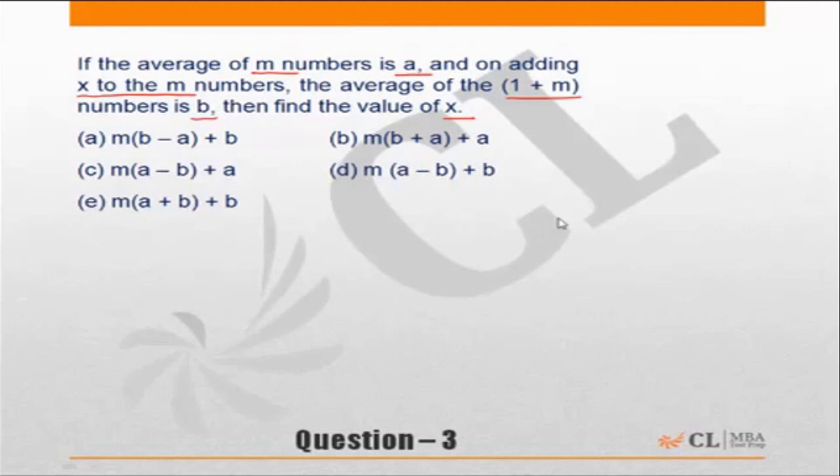Let me take, let's say, three numbers: 4, 5, and 6. So I am saying let m be equal to 3 and these are the three numbers. The average of these three numbers is equal to 5. So m is equal to 3, average of these three numbers is 5, so 5 is nothing but a. So we get a is equal to 5.